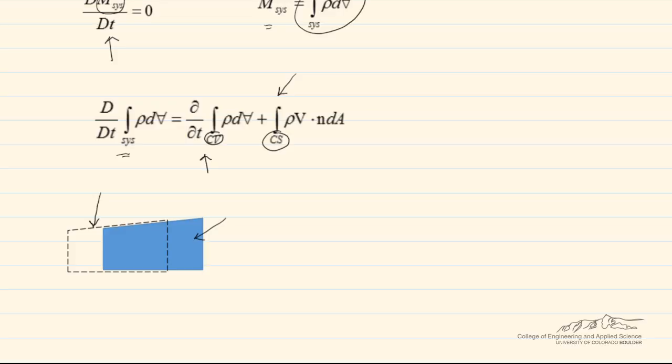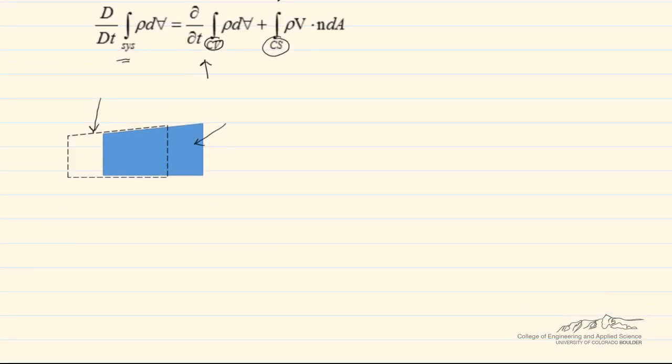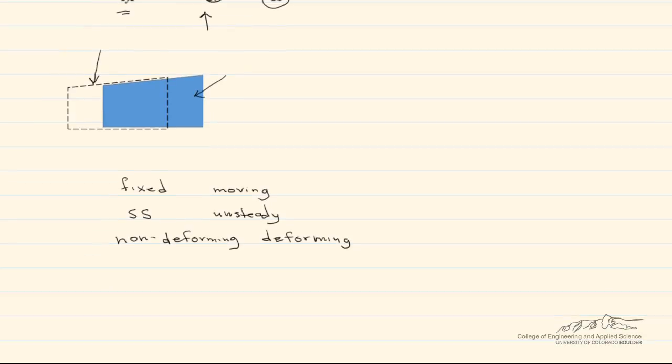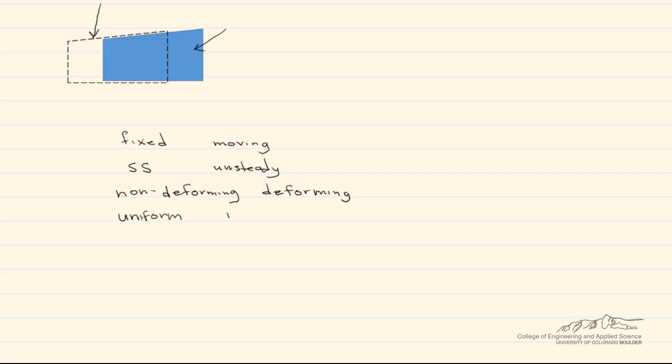There are a number of different ways we can use this equation. We can have a control volume that's fixed or moving. It can be at steady state or unsteady state. It can be non-deforming or deforming. And what we mean by deforming is that the control volume actually shrinks or expands. We can also have uniform velocities, non-uniform velocities, or a combination of both.